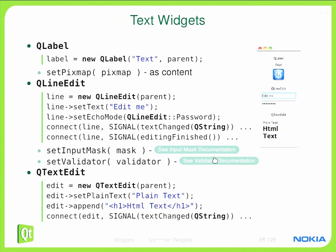Here you can see a screenshot with several kinds of text widgets. It's basically an example for a messenger-kind application with a label on the top, instantiated using new QLabel, taking the text string and the parent as parameters. Below you can see a pixmap showing the KDE logo. You can set this pixmap using setPixmap, taking the pixmap as a parameter.